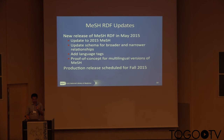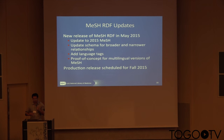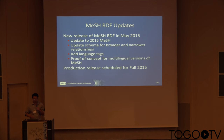In this second beta release, we updated to MeSH 2015, changed the schema slightly, and added a multilingual version of MeSH. This multilingual data comes from UMLS rather than MeSH itself — we basically added this information to MeSH to support multiple language versions. The production release is planned for Fall 2015.